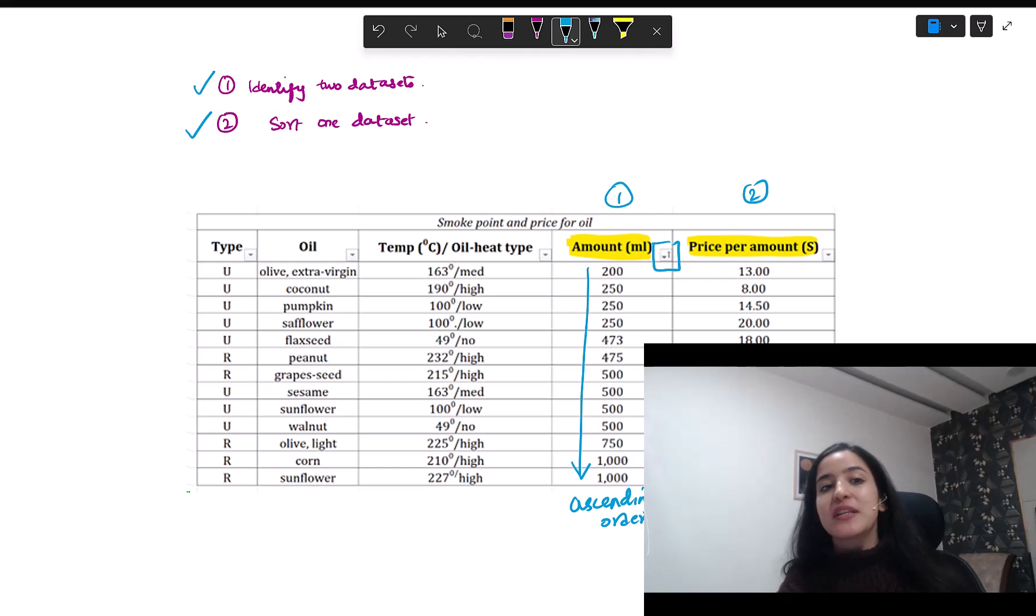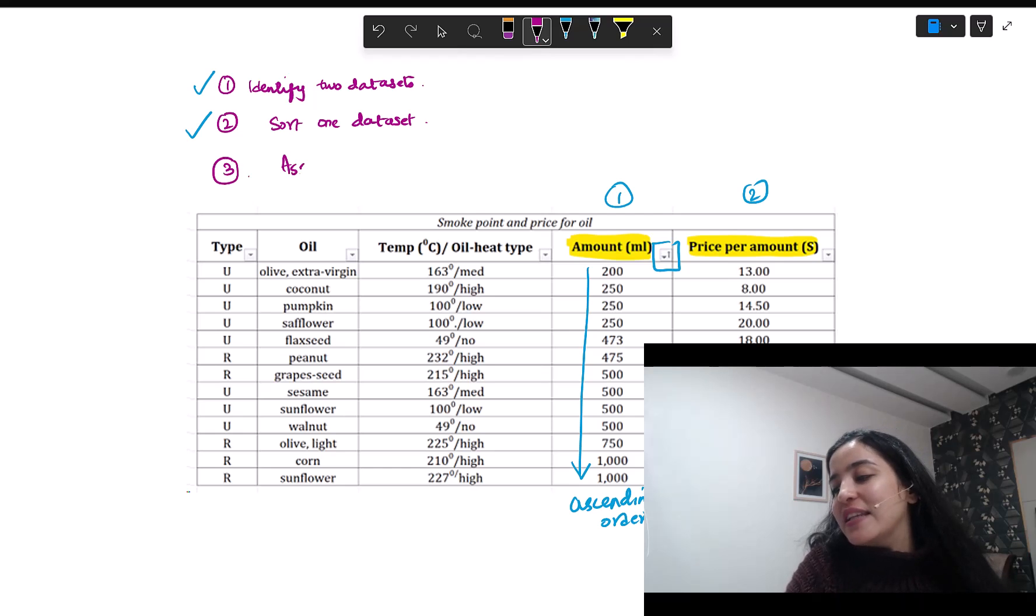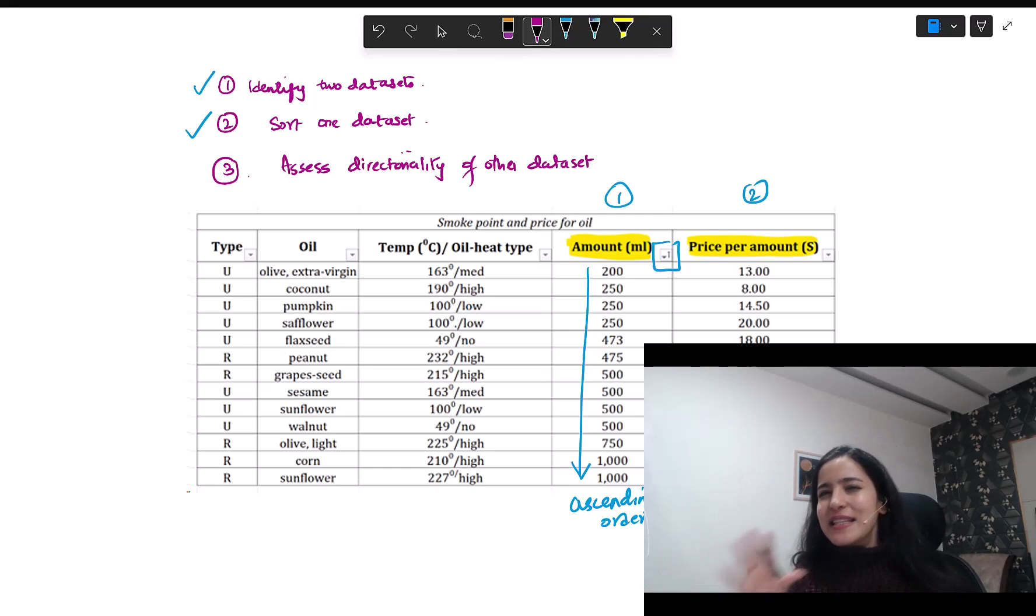Now, what's your third step after you've sorted the data in one column? Now, you want to assess the directionality of the other data set. This is where I will now look at the second data set and see what is happening to the values. What is the step we follow for that? We do not look at every single data value. Instead, we split this entire column into two halves. You have a lot of values here. Where will you split it? Say, about here, this is where a split happens. These are half of the values on top. These are about half of the values down below.